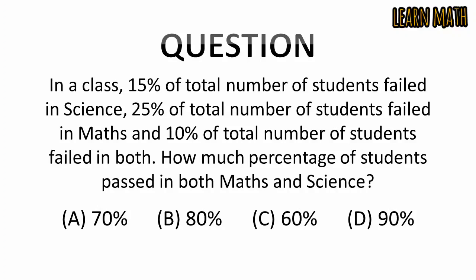The question is, in a class, 15% of total number of students failed in science, 25% of total number of students failed in maths, and 10% of total number of students failed in both. How much percentage of students passed in both maths and science?